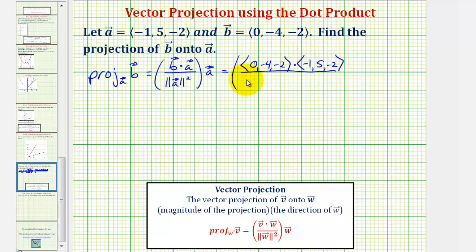The magnitude of vector A would be the square root of negative one squared plus five squared plus negative two squared. And again this is squared, and then times vector A.